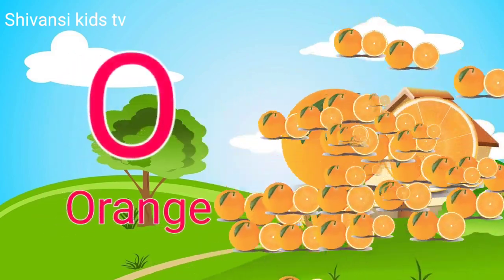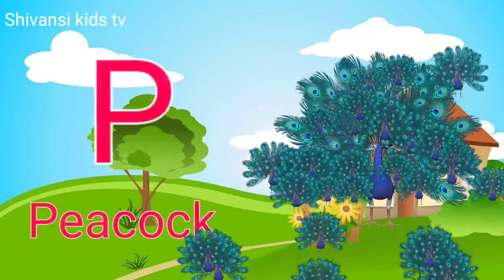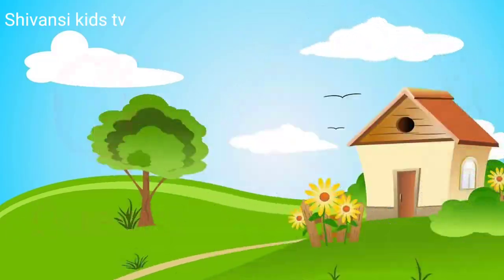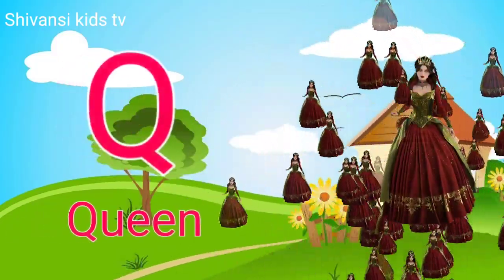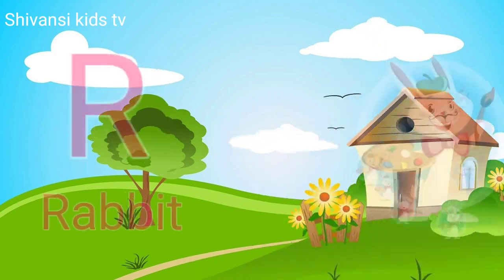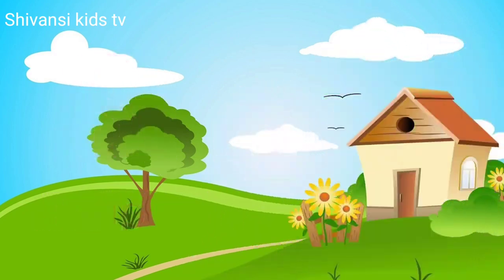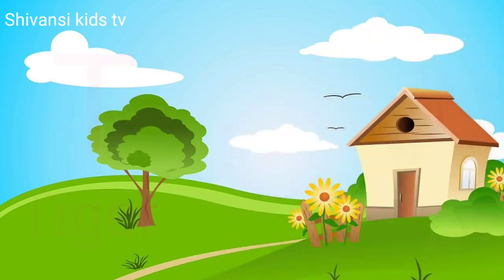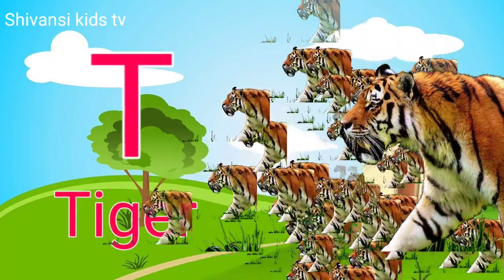O for orange, P for peacock, Q for queen, R for rabbit, S for sheep, T for tiger.